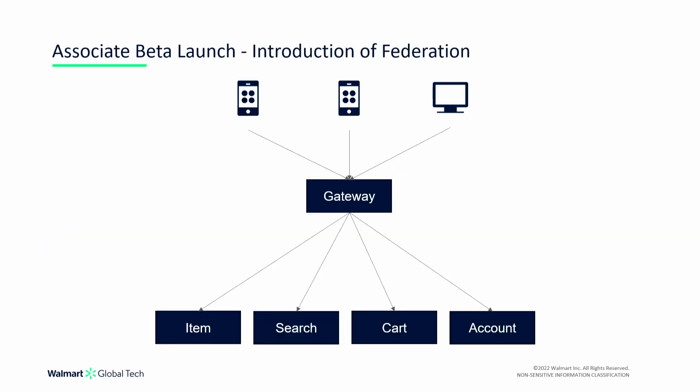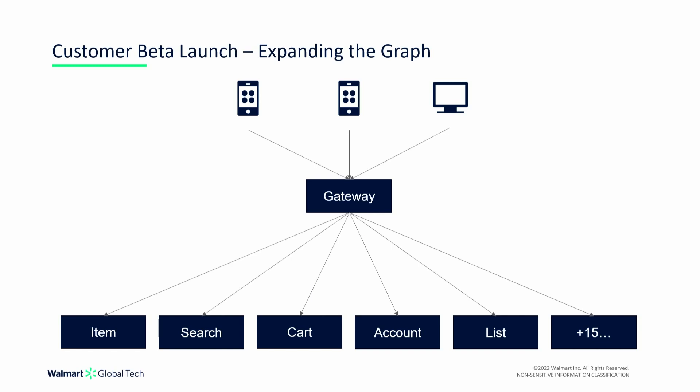Our associate beta launch had an architecture that looked like this. By the time we released to customers, we had implemented federation — we had a gateway. We had also rolled out Android, iOS, and web, and created more sub-graphs. We were truly running federation and were able to test whether this was going to work for us — and luckily it did. We started rolling this out to all our customers eleven months after our first check-in. It was a phased rollout done very methodically over time. Our graph at that point had around 20 sub-graphs, all required to meet the functionality needed for our application.